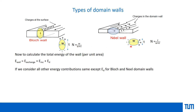An important point is that the Bloch wall places demagnetization charges on the surface of the film. This is not preferred in thin films because the surface then has large demagnetization fields pointing outward. Bloch walls are therefore only preferred in very thick films and single crystals. The Néel wall, however, places charges within the plane of the film, making it more suitable for thin films.